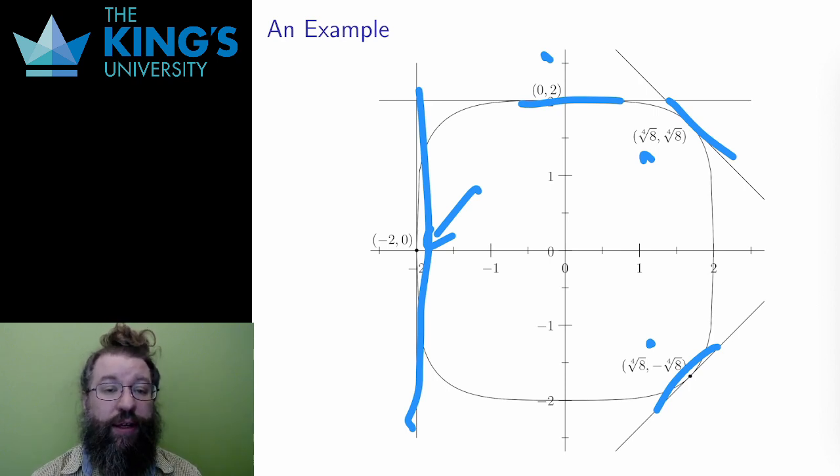So this technique is implicit differentiation. Using the chain rule to calculate derivatives for loci which are not graphs of functions, but doing so by pretending that they might be, and then finding the slopes of their tangent lines by solving for this implicit derivative.